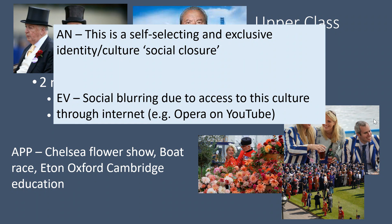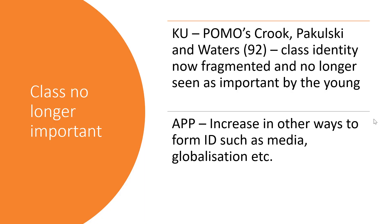These cultural pursuits that once formed upper class identity exclusively are becoming more accessible and therefore blurred. On the other hand, people like Prince William follow a football team — traditionally a working class pursuit — showing blurring from the other direction too. The last argument to consider is that class may no longer be important at all. Postmodernists Crook, Pakulski, and Waters argue that class is now fragmented and other things have become more important to identity — sexuality, age, fashion, and so on.